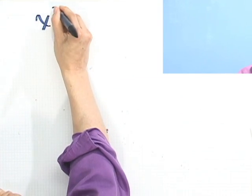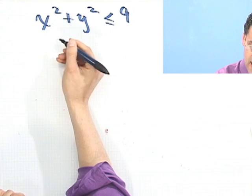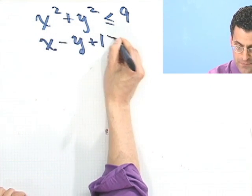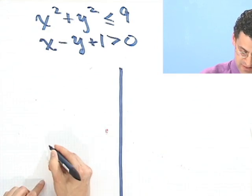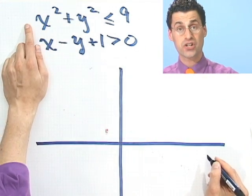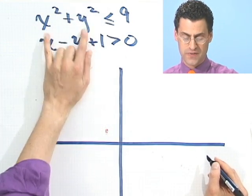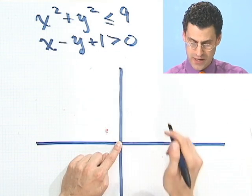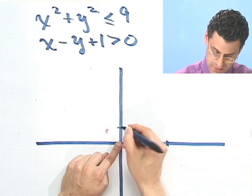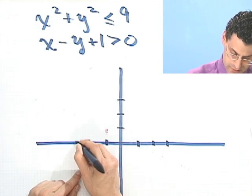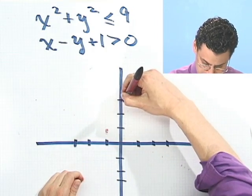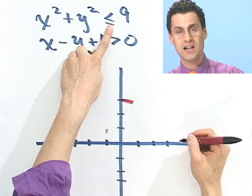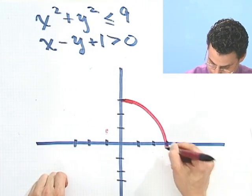Let's try one last example with nonlinear functions: x squared plus y squared less than or equal to nine, and x minus y plus one greater than zero. I recognize the first equation is a circle centered at the origin with radius equal to the square root of nine, which is three. I draw a circle of radius three. Since I have an equal sign, I make it a solid boundary.